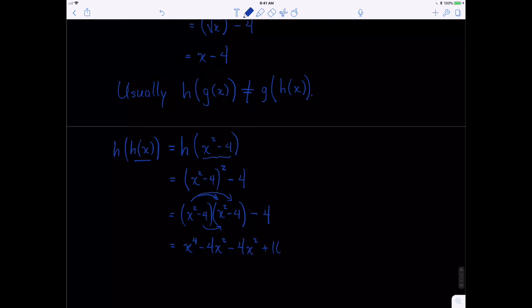We have plus 16 minus 4. And then if we combine like terms, we have like terms in the x squareds and in the constants. And so our final result is x to the fourth minus 8 x squared plus 12 is the result of h of h of x. And that is how you compose functions. Thanks for watching.